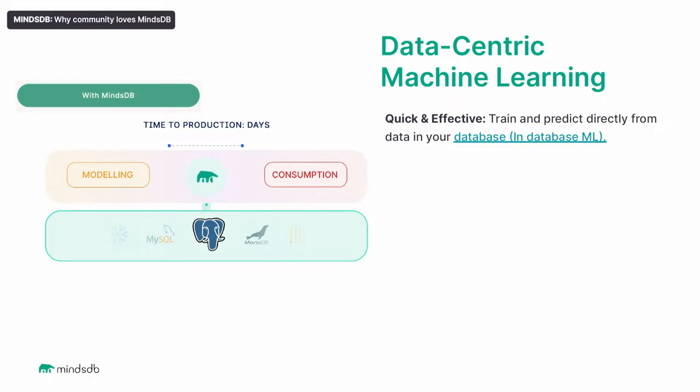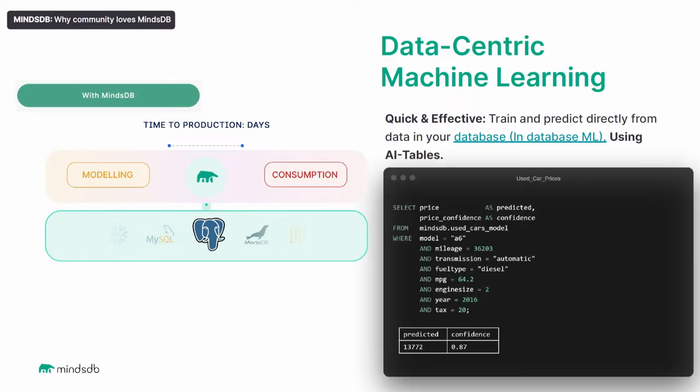Essentially, if your data is in the database, you can train the model directly from the database. And actually, you can consume the model as if it was a table. That is the second innovation that MindsDB brought to the table, and why MindsDB today is the fastest growing applied ML project in the world.